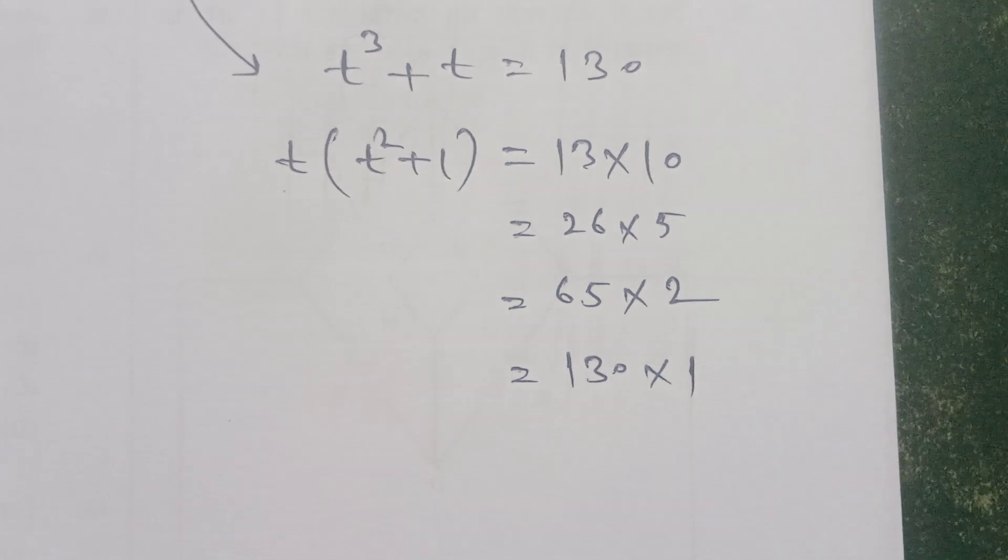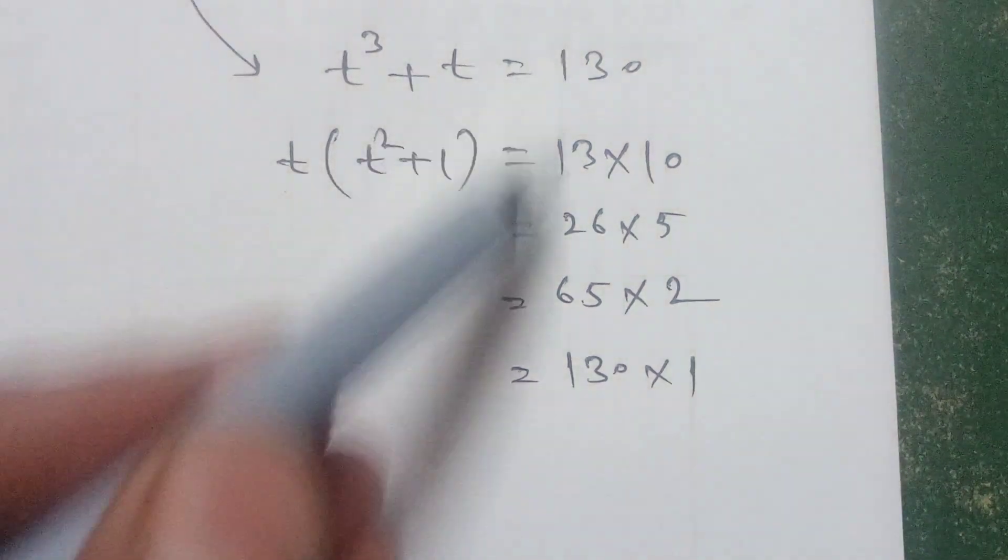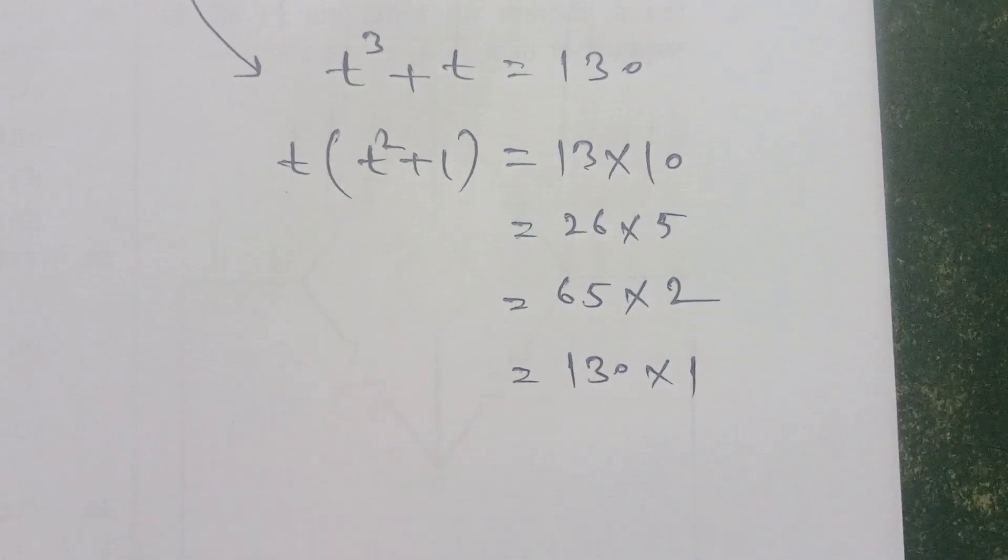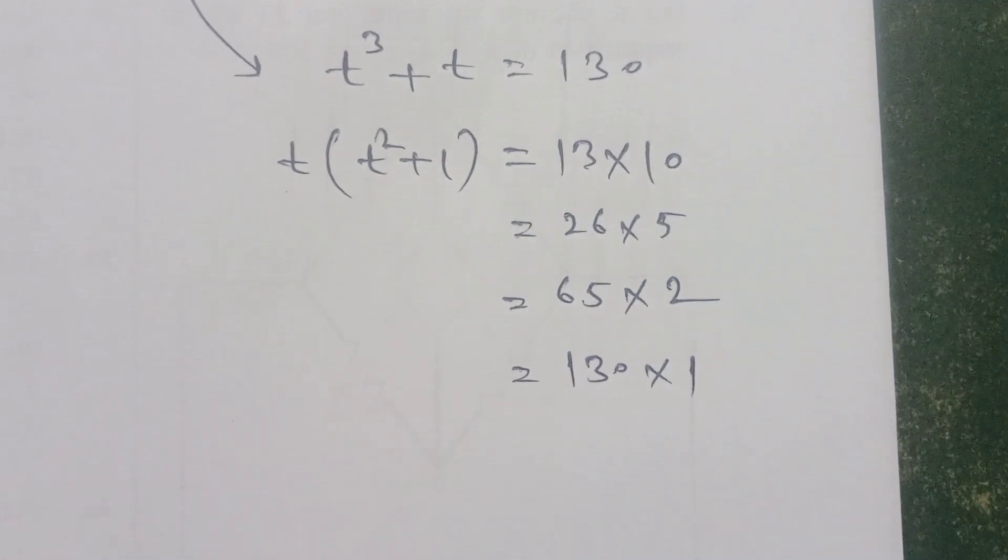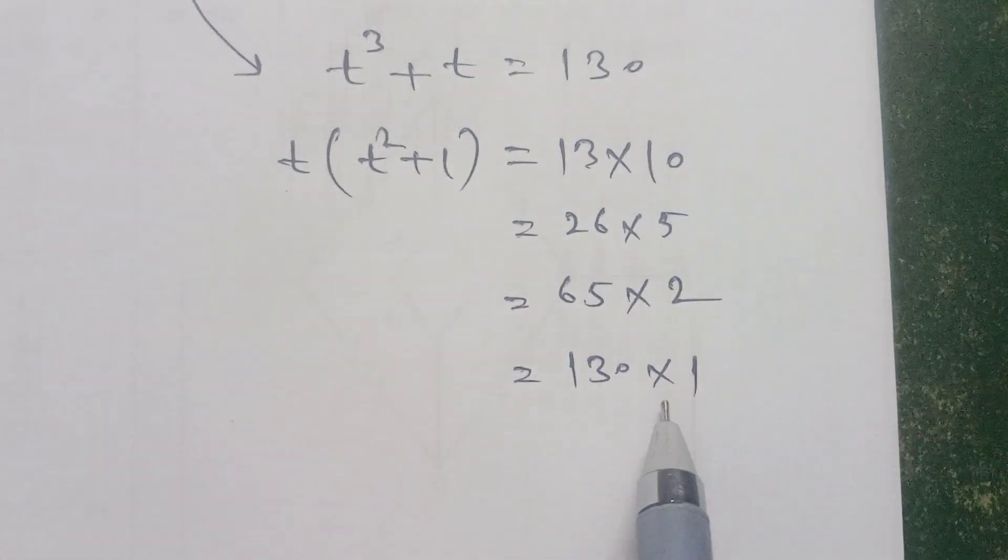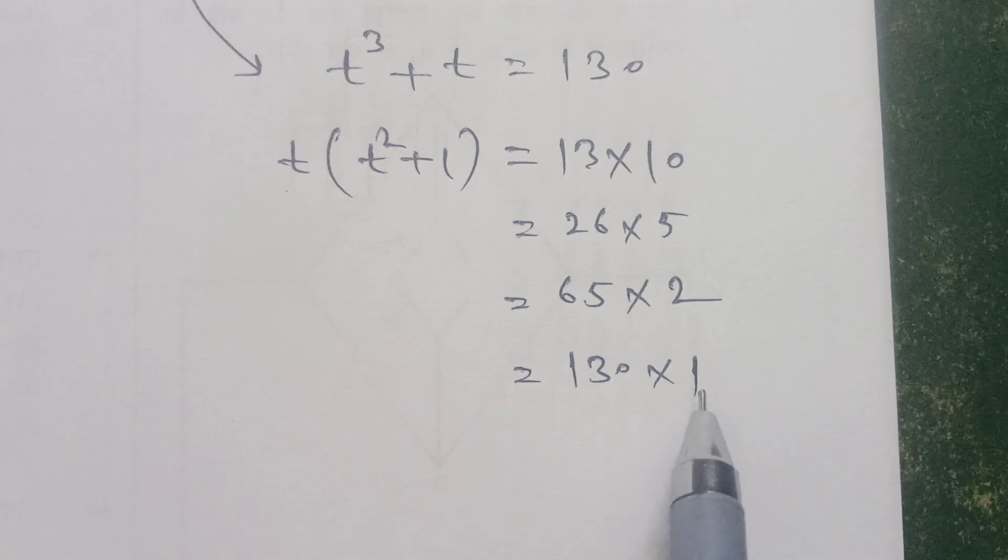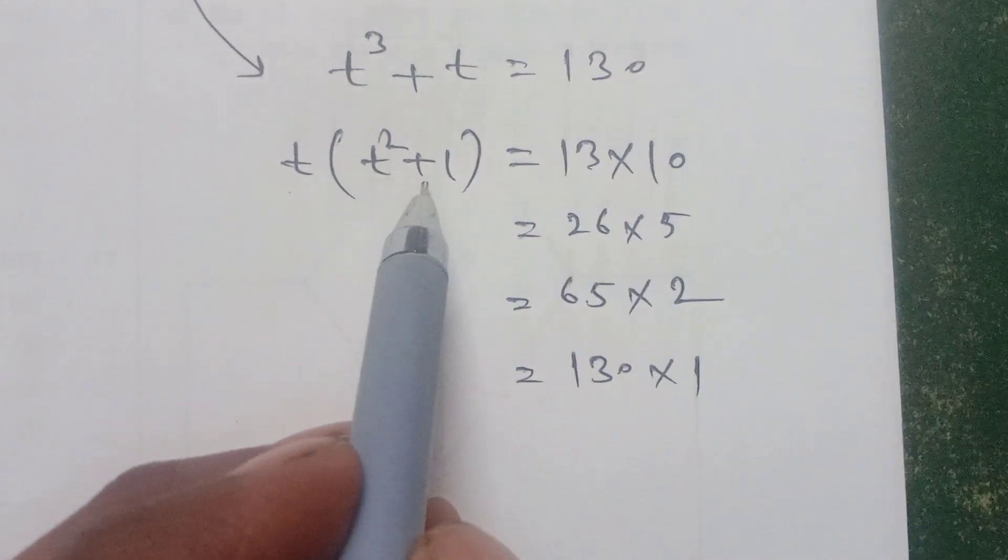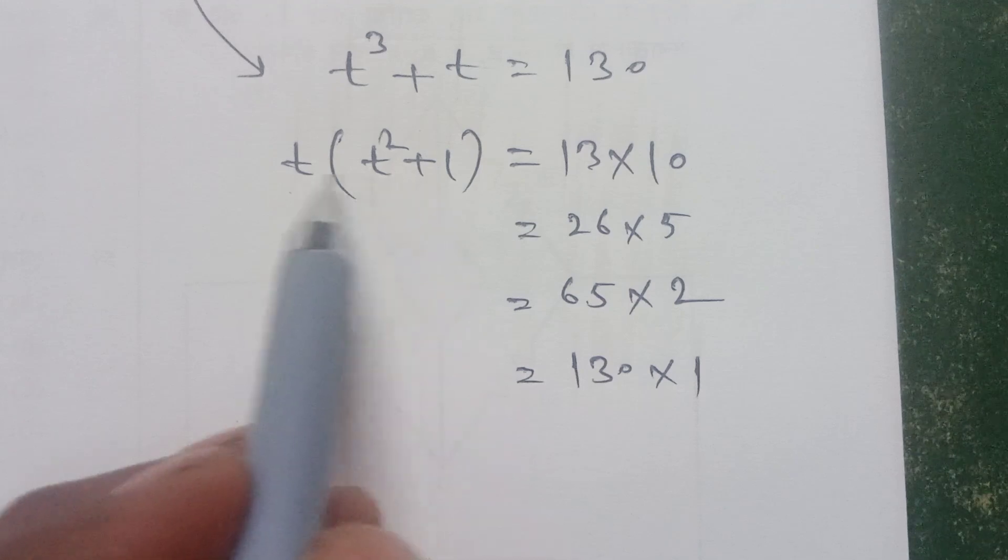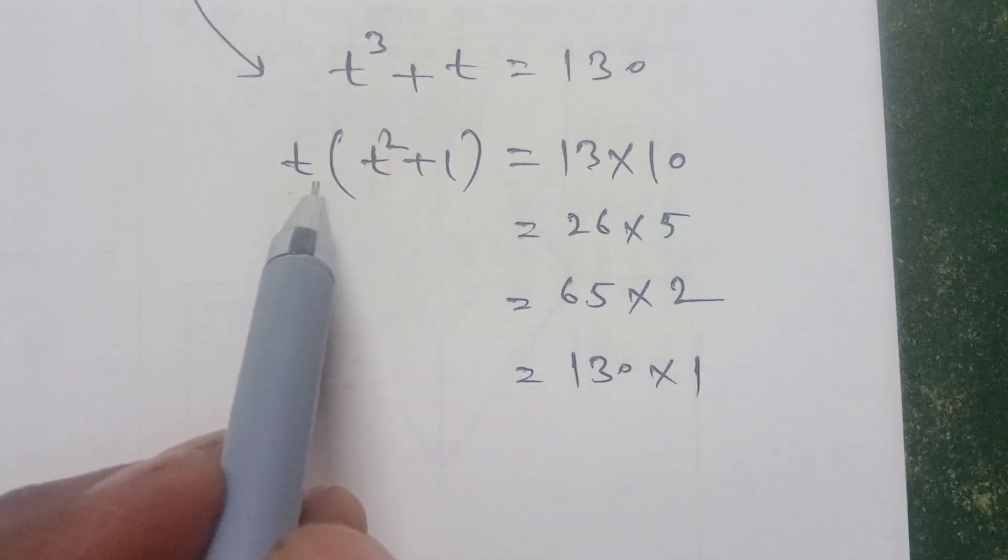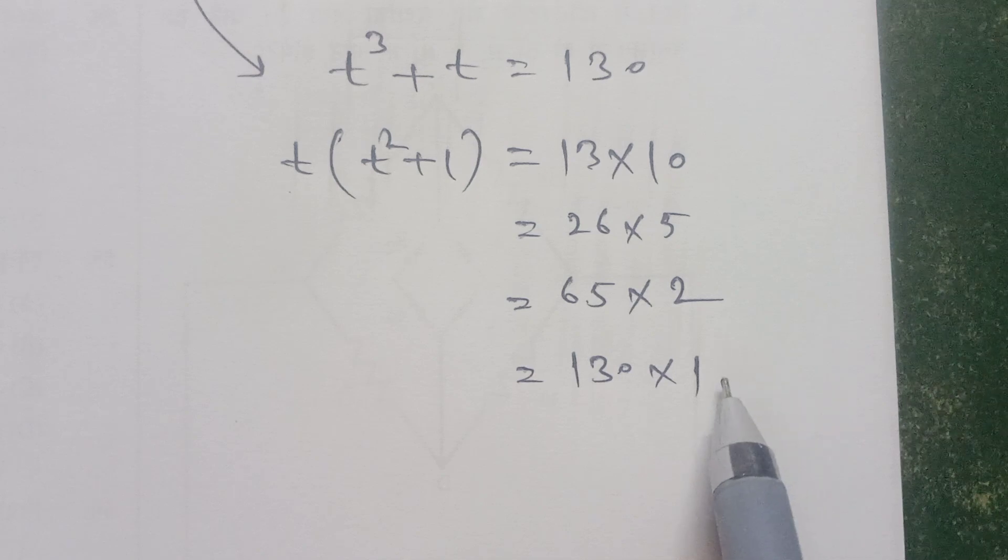These are all the factors of 130 and all possible values we check for the condition t squared plus 1 is greater and t is smaller, so we check each condition.